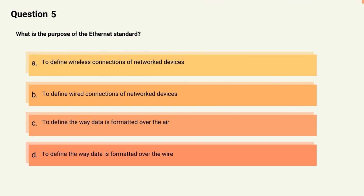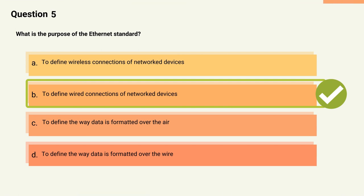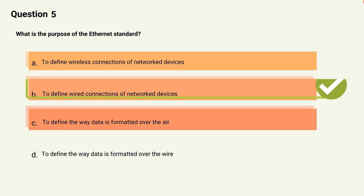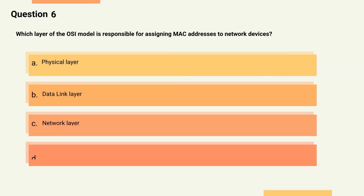Question 5: What is the purpose of the Ethernet standard? Options: A) To define wireless connections of network devices, B) To define wired connections of network devices, C) To define wireless devices, D) To define the way data is formatted over the wire. The correct answer is Option B. Explanation: Ethernet (IEEE 802.3) is a standard that defines wired connections of network devices and defines the way data is formatted over the wire to ensure disparate devices can communicate over the same cables.